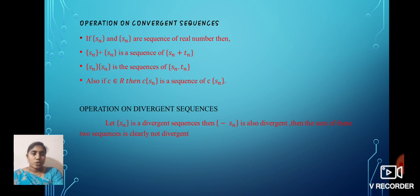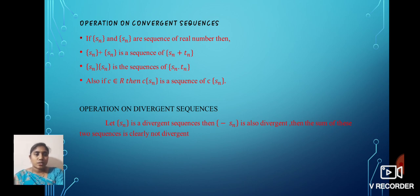Next, we define operations on divergent sequences. Let the sequence {Sn} be divergent; then the sequence {-Sn} is also divergent. Then the sum of these two sequences is clearly not convergent.